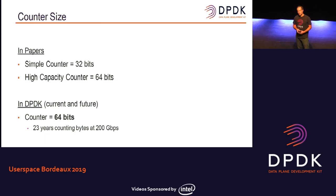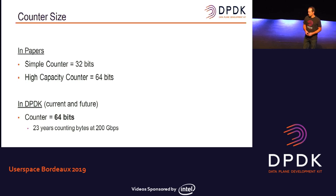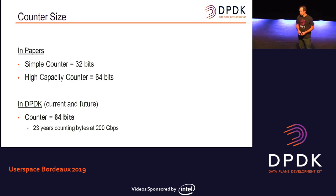A counter of 64 bits — let's take the worst case of today to see how long to fill all 64 bits. The worst case is counting all bytes you receive. If you have a Mellanox device at 200 Gbps, you will need 23 years to fill this counter. And anyway, given how stable DPDK is, it's probably more than enough.